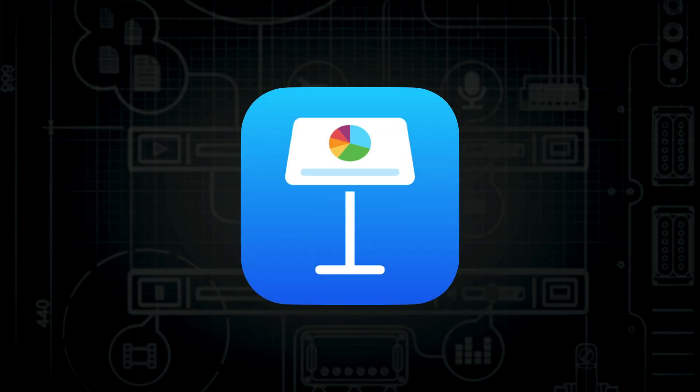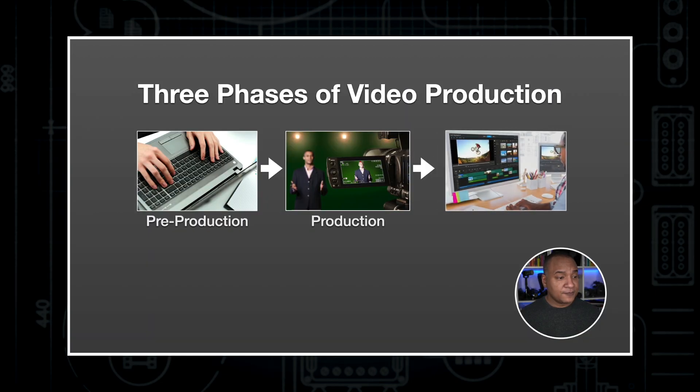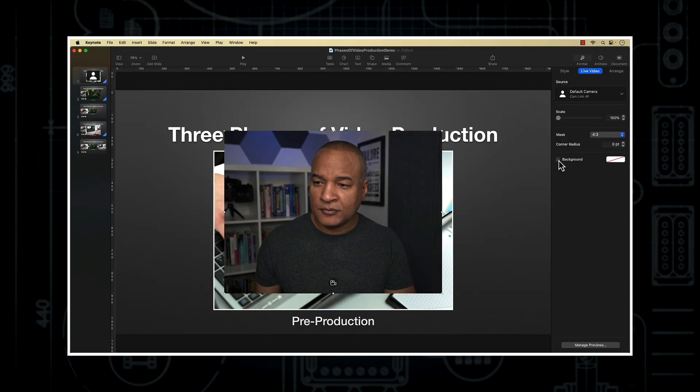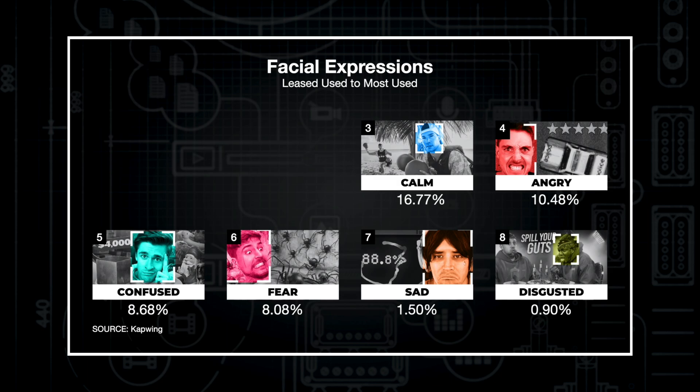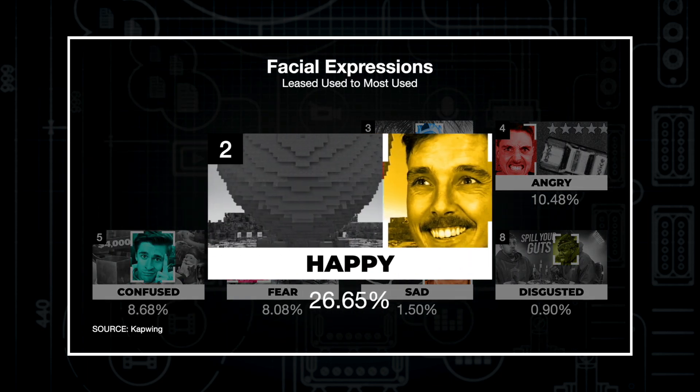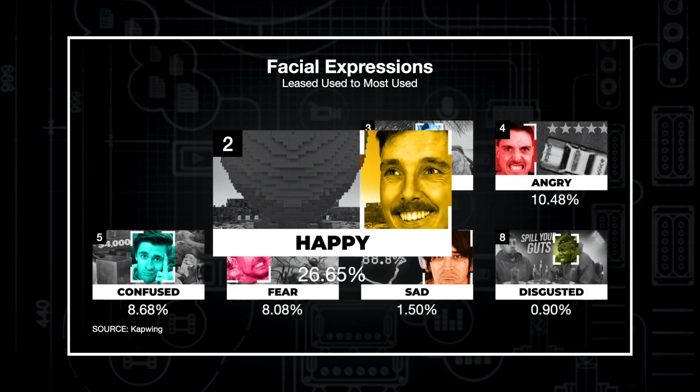If you've been following this channel for any amount of time, you know the power of Apple Keynote for video creation. I've covered all kinds of different ways that you can record pro-quality video using this presentation software. In this video, I'm going to show you yet another way — one that's actually pretty quick and in some ways more efficient than other methods, though it does take a bit of preparation. I actually used this method for a video I made for my other channel, Michael Kinney, and I'm going to use that project as the example in this tutorial.